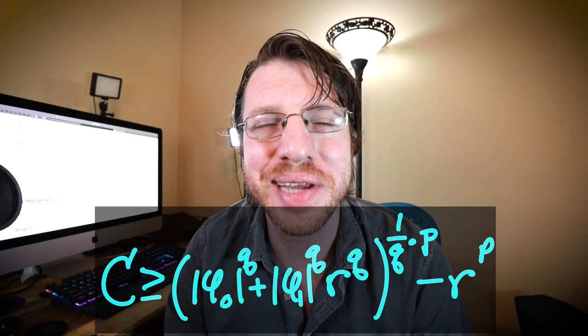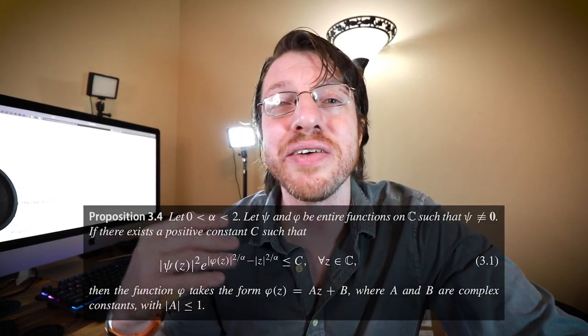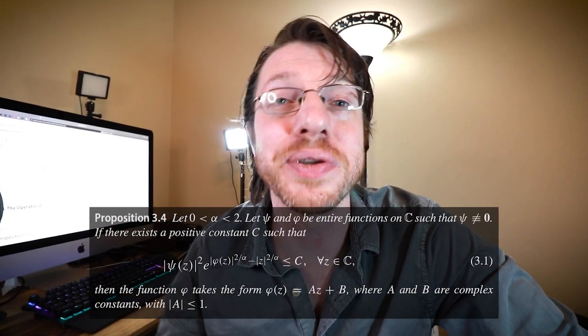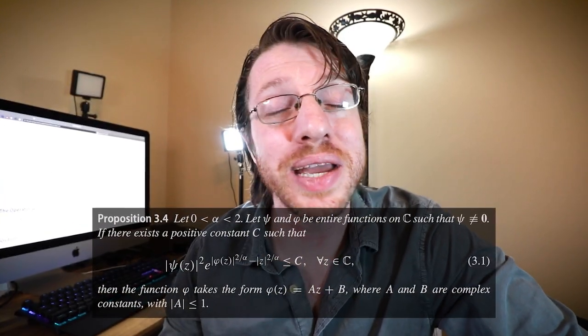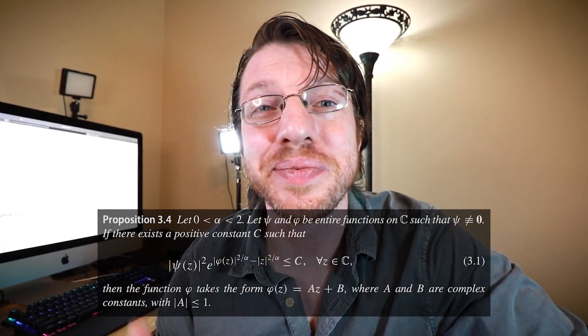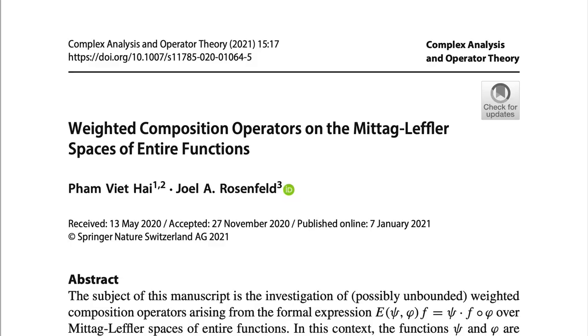And so there you go. That ends up using the Hausdorff-Young inequality. And now we have demonstrated a new little theorem about complex analysis. And it says that if we have a phi that is entire that satisfies this bound, then we end up having an affine function. And so that ended up being very handy for us and actually proved one direction of the theorem that we needed.